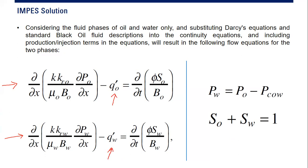In the two-phase flow equation, on the left side we have the spatial term, and on the right side we have the time aspect. We have absolute permeability multiplied by relative permeability, divided by viscosity and formation volume factor, multiplied by the pressure gradient. On the right side, we have porosity multiplied by saturation divided by the oil formation volume factor, and a production or injection term.